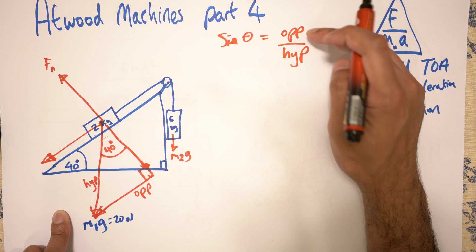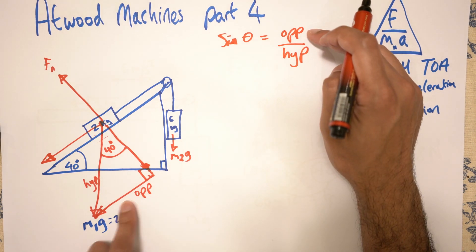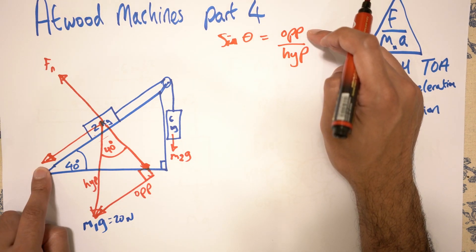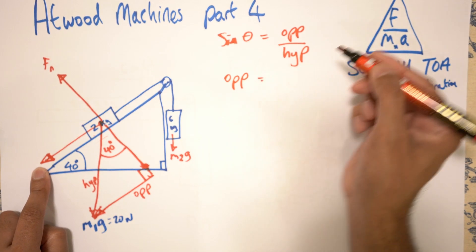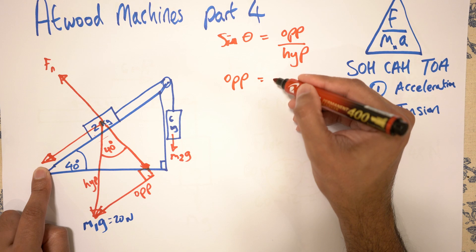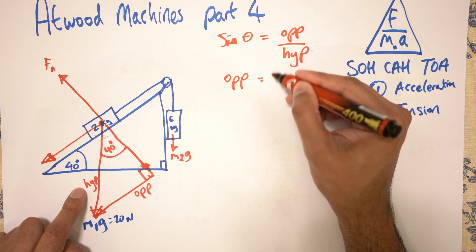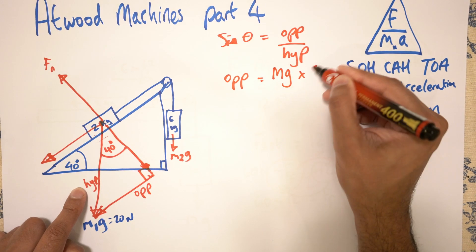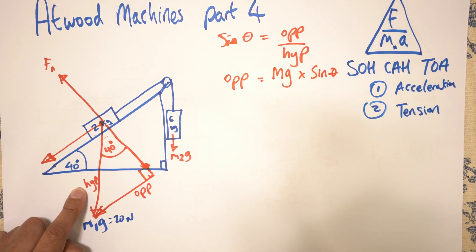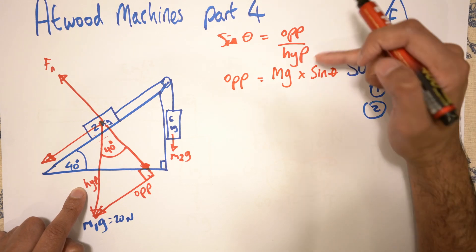Sine theta is equal to opposite over hypotenuse. So if you want to work out the opposite, which is this one, which is over here, it equals M1G, which is the hypotenuse, times sine theta, which is 40.